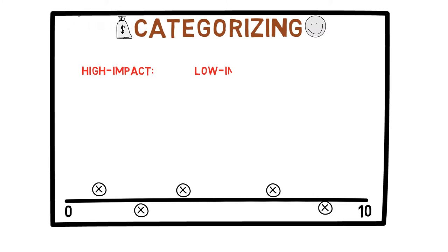High-impact decisions are the ones that have a lot of influence over your life — your decisions in these instances determine a lot. Low-impact ones determine much less individually, but their number is much greater. Typically, both categories are equally important.